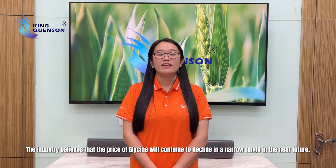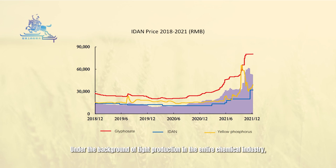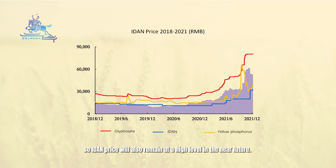For IDA, its main raw materials are natural gas, sulfuric acid, and caustic soda. Given the backdrop of tight production across the entire chemical industry, the cost of these basic chemical raw materials is difficult to reduce. So IDA prices will also remain at a high level in the near future.